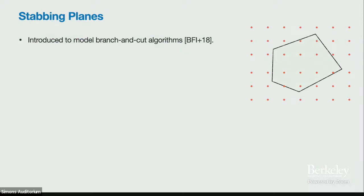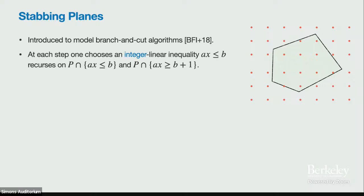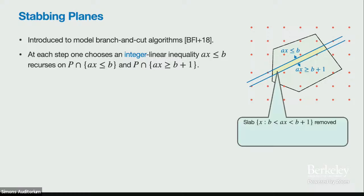In 2018, we introduced the proof system stabbing planes to model branch-and-cut solvers and more modern integer programming algorithms. A stabbing planes proof is simple: at each step, we pick an arbitrary integer linear inequality (A and B integral) and branch on whether ax ≤ B or ax ≥ B+1. We recurse on the two resulting polytopes. This removes a slab between the two half-spaces — and since A and B are integral, this slab contains no integer points.